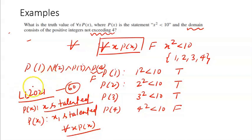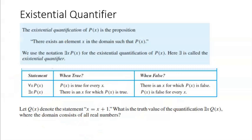Suppose 59 of them are talented but one is not — then it becomes a false statement. Or if two are not talented, it is also false. The point is that every single one should be talented. If we can find even one counter example — one student who is not talented — then the statement becomes false.